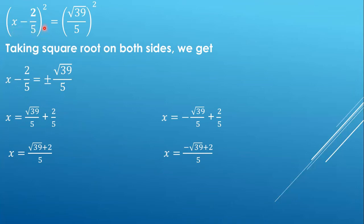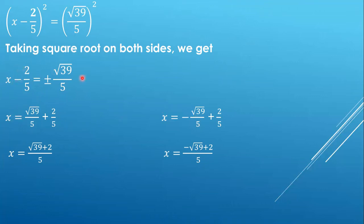We send the -39/25 to the right-hand side and write it in the form of a square: (√39/5)². Now we remove the square roots and get x - 2/5 = ±√39/5. This can be written in two ways: plus √39/5 and minus √39/5. So x = √39/5, and we send -2/5 to the right-hand side where it becomes +2/5.